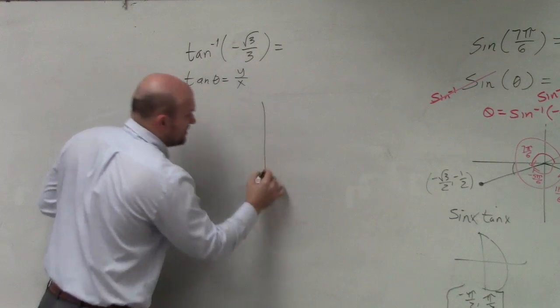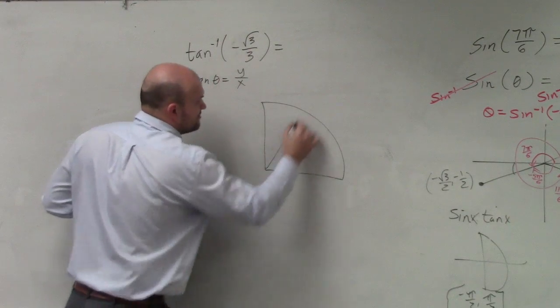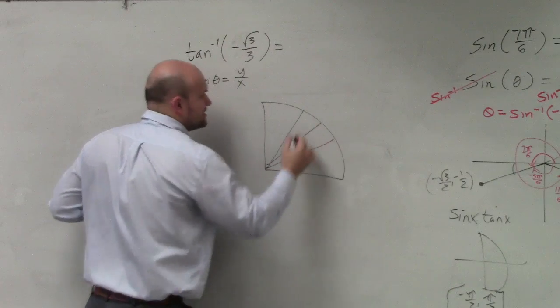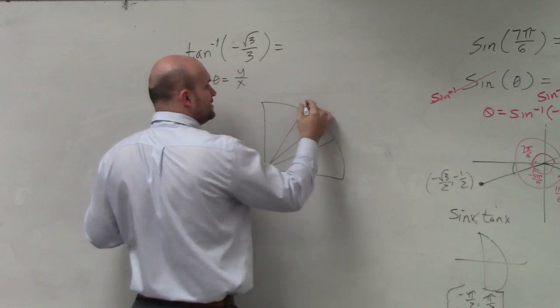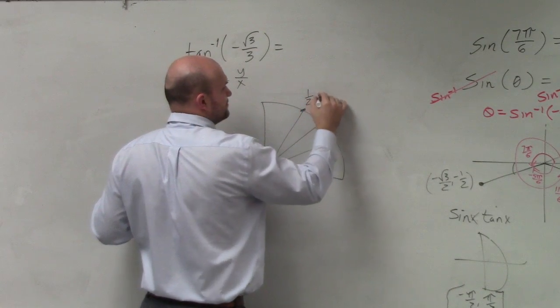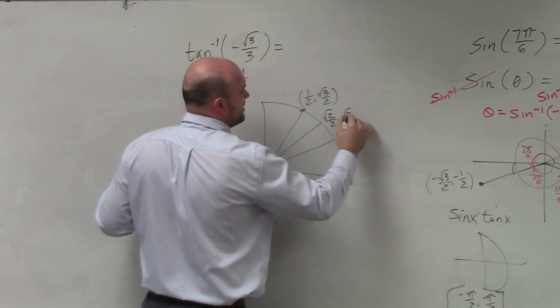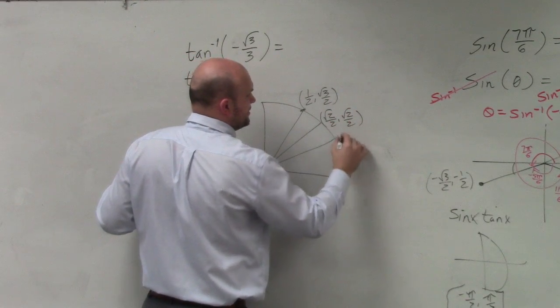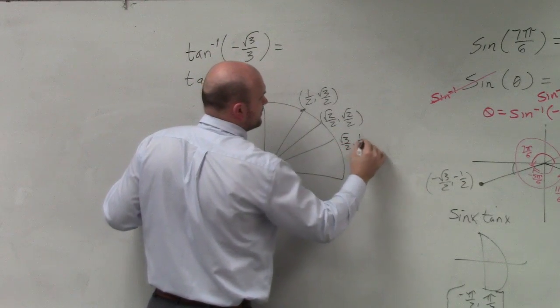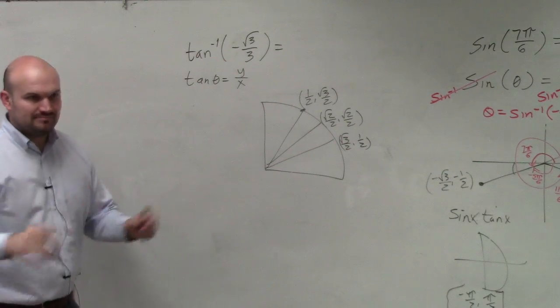The other thing that I should automatically be able to draw without blinking an eye is my unit circle from the first quadrant. So before I take my test, I'm going to want to make sure I can do exactly what Mr. McLogan is doing right now. Bam, got him done, right there.